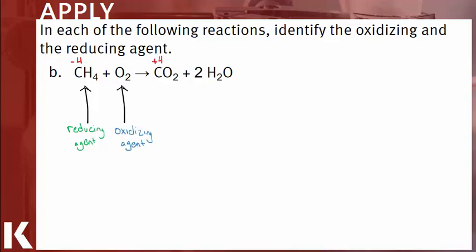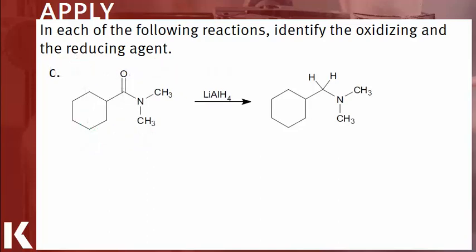For molecular oxygen, conversely, it must be acting as the oxidizing agent since it's causing the oxidation of methane. Lastly, identify the oxidizing and reducing agent in part C. Rather than looking at the reactant and assigning oxidation numbers, take a look at the reagent: lithium aluminum hydride is a reducing agent, as discussed earlier, illustrated by its many hydrogen bonds. Since a redox reaction must have a reducing and oxidizing agent, the reactant must be the oxidizing agent. You can confirm this by comparing the carbonyl carbon on the amide group of the reactant to the related carbon on the product side — the reactant lost two bonds to oxygen and gained two bonds to hydrogen. Therefore, N,N-dimethylcyclohexane carboxamide is being reduced and is acting as the oxidizing agent.